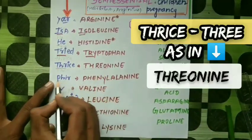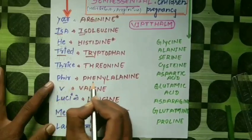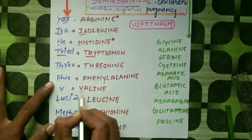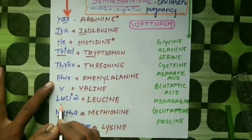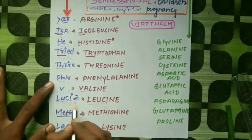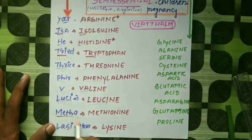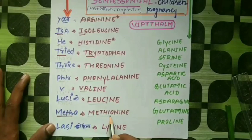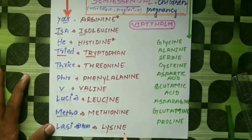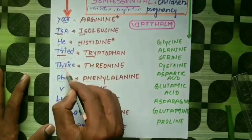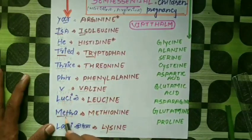So the trick is: Threonine — T, Phenylalanine — F, Valine — V, Leucine — L (Lucy is the name of a girl), Methionine — M (mitha), and Lysine — L (Lusy). The trick phrase is: 'Your eyes are hit tried thrice, phyr bhi Lucy ko mitha Lusy nahin mila' — meaning even then sweet Lucy didn't find Lusy.